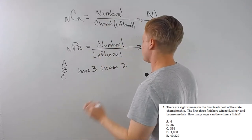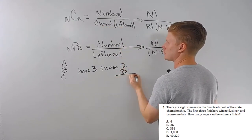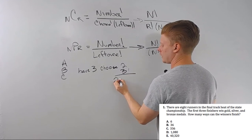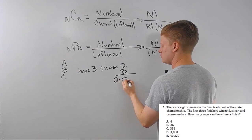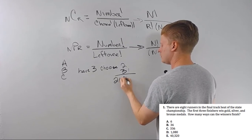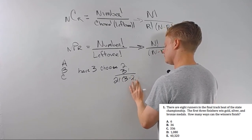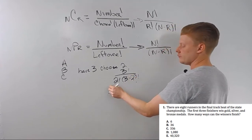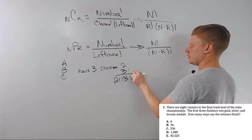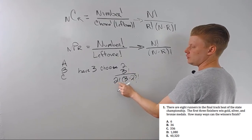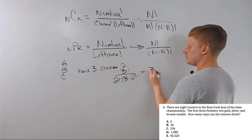Plugging this into our NCR formula, we get 3 factorial — which is 6 — over 2 factorial times (3 minus 2), which is 1 factorial. So that's 3 times 2 times 1, over 2 times 1 times 1, and everything cancels down to 3. You can verify it in your calculator — the answer is 3.